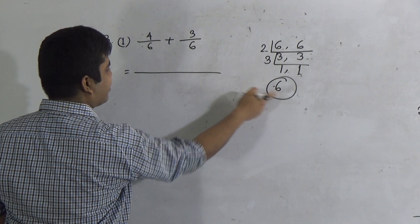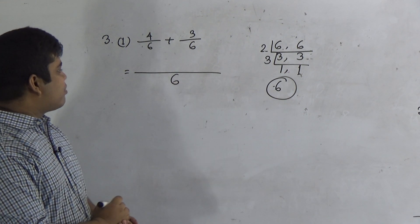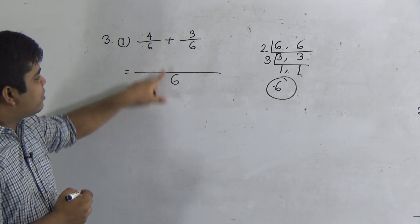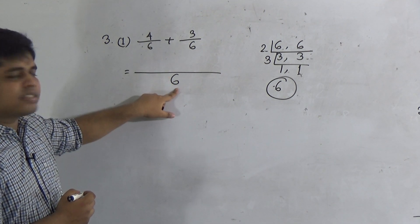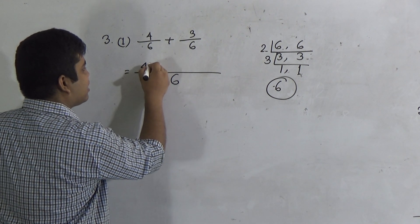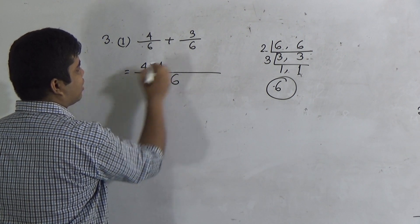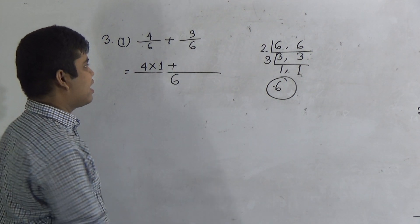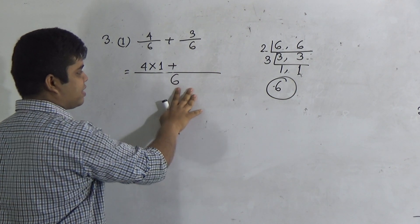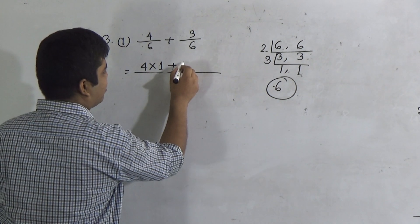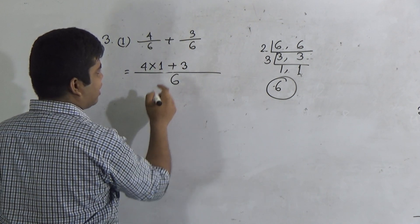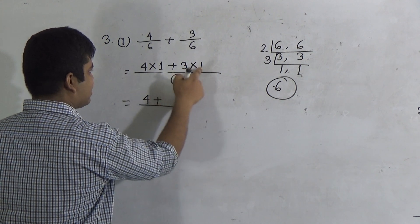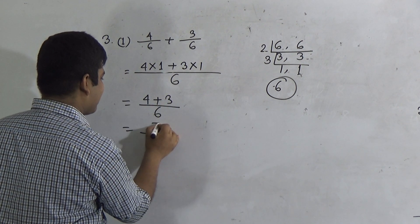So this denominator 6 is written here. Now we divide this LCM by the denominator of the first fraction — that means 6 divided by 6 gives 1. That 1 is multiplied with 4, giving 4 times 1. Again, we divide this LCM by the denominator of the second fraction. Here the denominator of the second fraction is 6, and LCM is 6, so 6 divided by 6 gives 1. That 1 is multiplied with the numerator 3. So: 4 times 1 is 4, plus 3 times 1 is 3, divided by 6. 4 plus 3 gives 7/6.